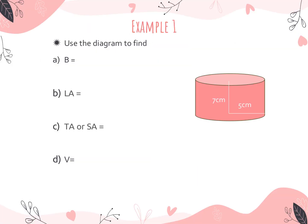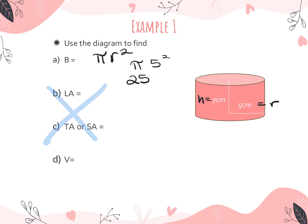Here's our first example. Since we're skipping surface area questions, let's just calculate the area of the base and the volume of the cylinder. The base is a circle, so we do π times radius squared. The radius is 5 and the height is 7. Leaving it in terms of pi, the base area is 25π square centimeters. Using a calculator and rounding to the hundredths place, that's 78.54 square centimeters.